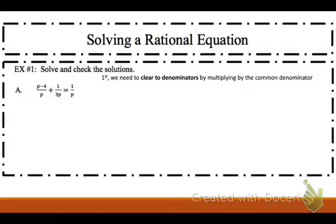Let's look at all of our denominators here. We have p, we have 3p, and we have p again. When the denominators look like this, look at the biggest one. 3p is our biggest denominator. Does p go into 3p? It does. So my least common denominator is 3p.